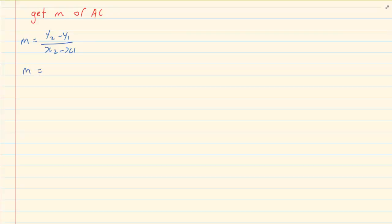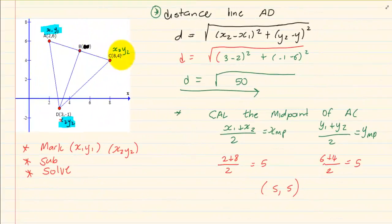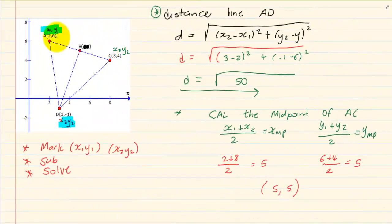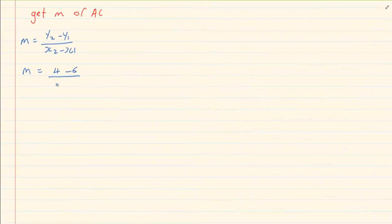Which will give us 4 minus 6 over 8 minus 2. So our gradient is equal to minus 2 over 6 which is equal to minus 1 over 3.